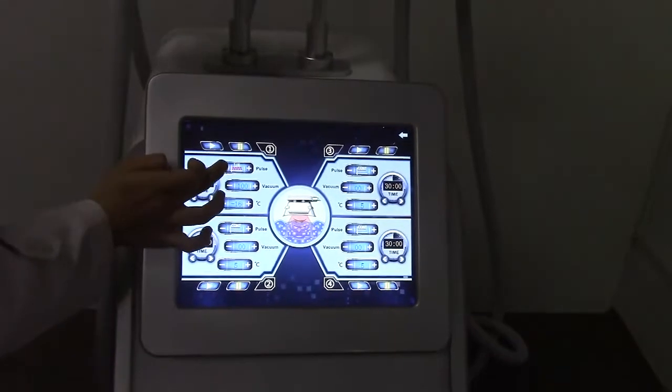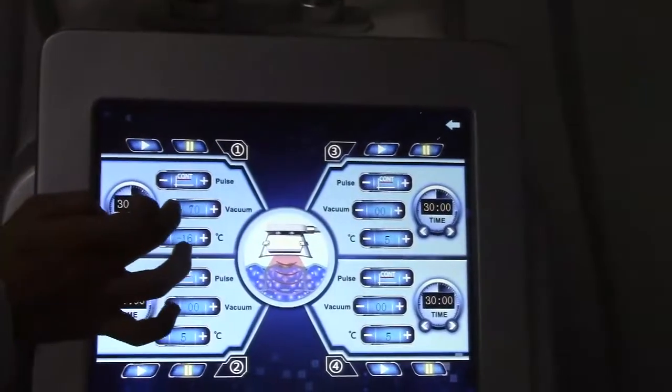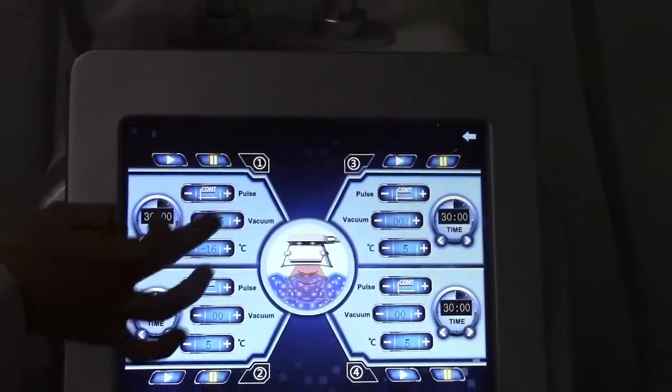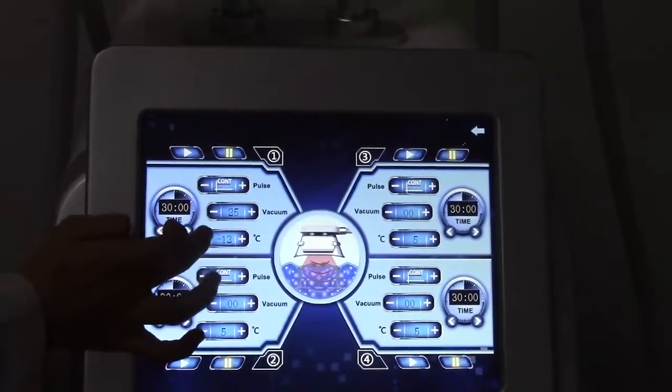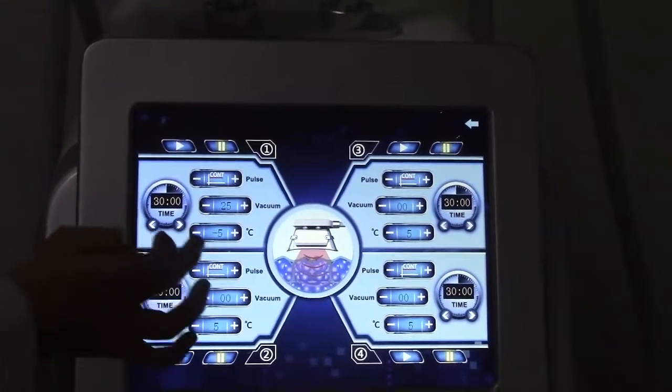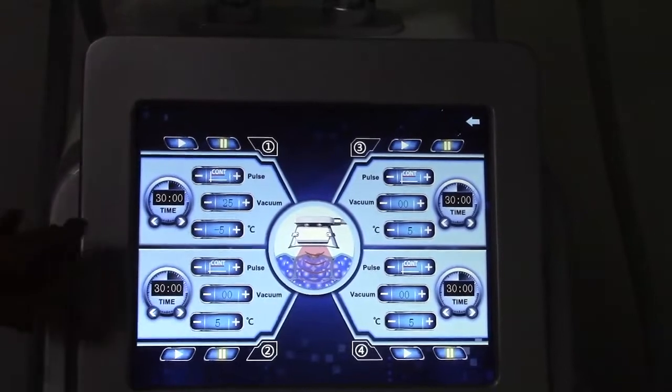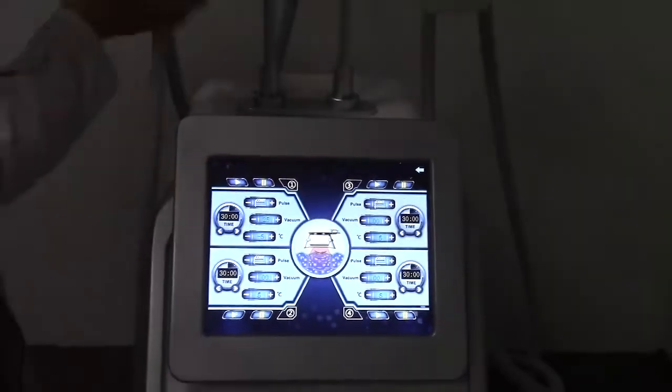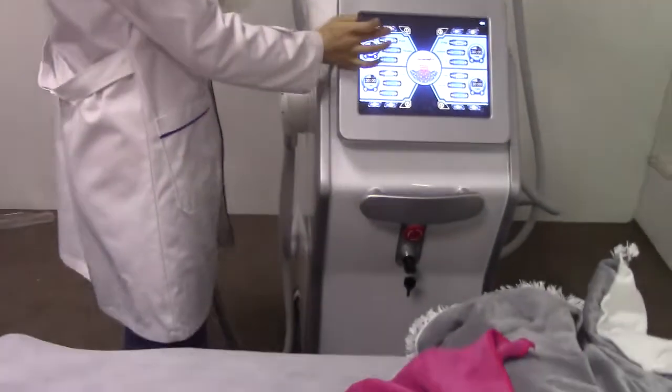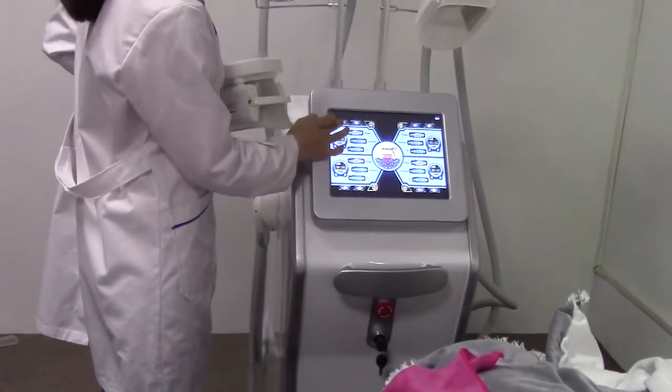We use the continuous mode and start from low vacuum, 25. Usually for the first treatment we start from minus 10 degrees. OK, we start treatment.